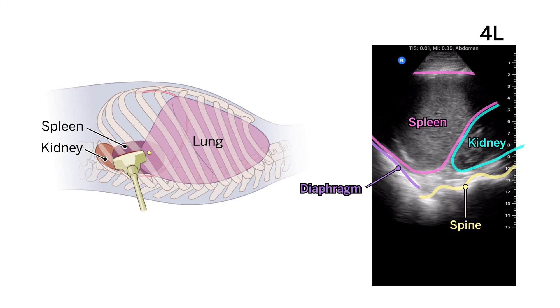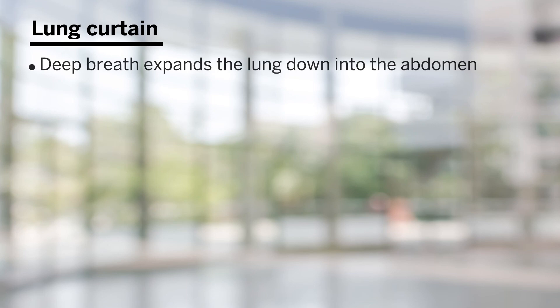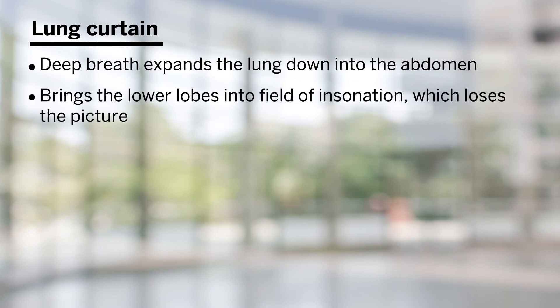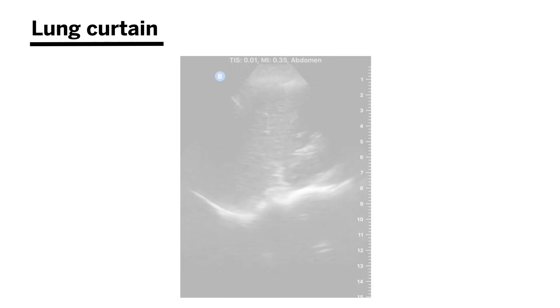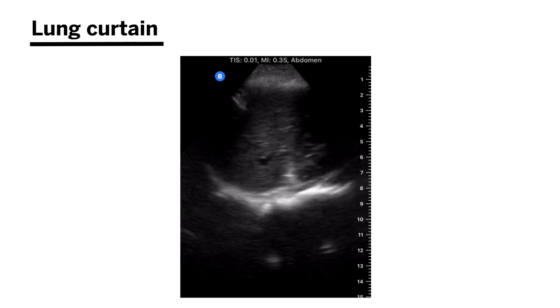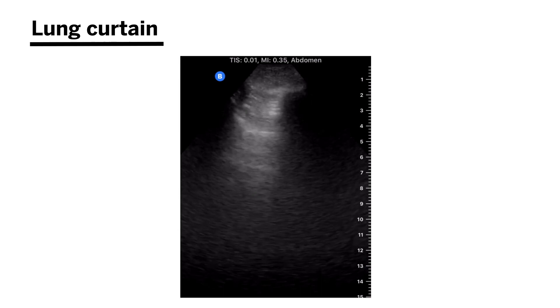Next up is lung curtain. Air is the enemy of ultrasound, so when a patient takes a deep breath in, they expand the chest and bring the lung down toward the abdomen, bringing the lower lobes into the field of insonation — and you lose your picture. This creates what looks like a curtain: as they breathe in, you lose the picture; as they breathe out, it comes back. This is known as a lung curtain, and it's often a good sign that there's not a large pleural effusion at the base of the lungs.